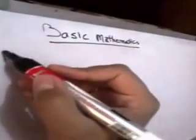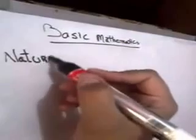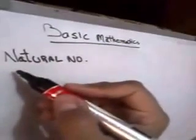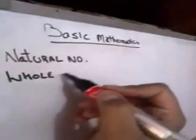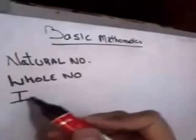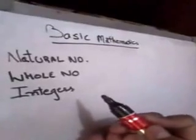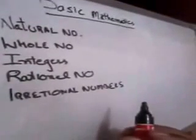Under number system we have different types of numbers: natural numbers, whole numbers, integers, rational numbers, irrational numbers, then we have real numbers.